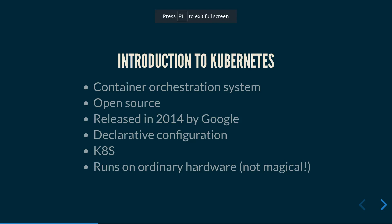So what is Kubernetes? Kubernetes is a container orchestration system. It's an open source project that was released in 2014 by Google. It is configured declaratively, meaning you tell Kubernetes what to do but not necessarily how to do it.